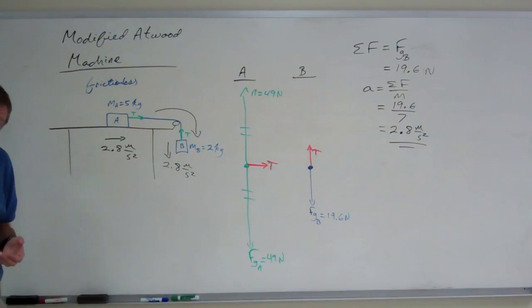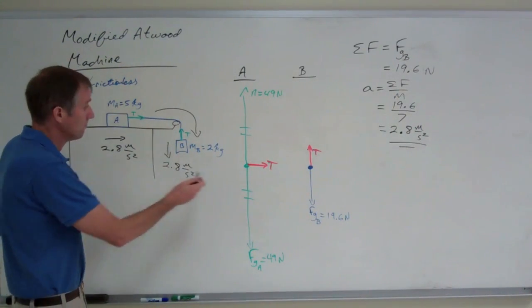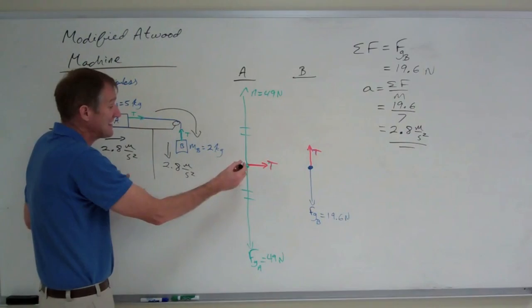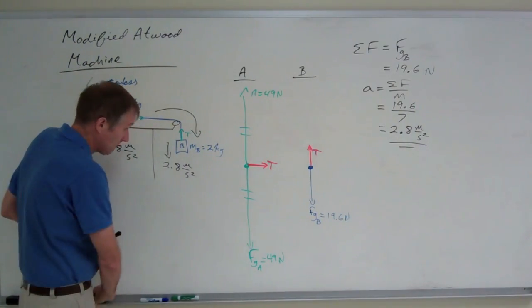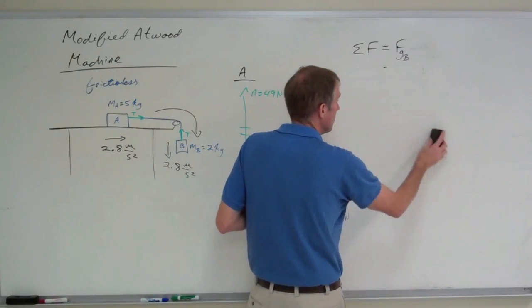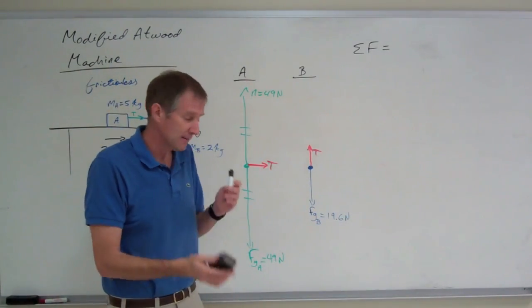In a case like this, it is much easier to look at block A because the net force in the x-axis on block A is just the tension. Remember that to find the tension, you only look at a single block, not the entire system.